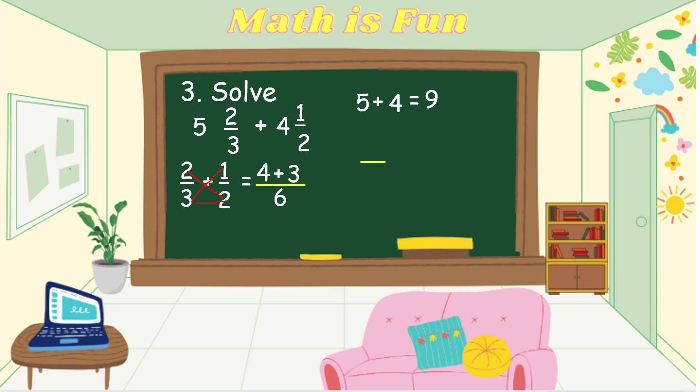We add the numerators 4 and 3: 4 plus 3 equals 7, and we keep the denominator 6. Our answer is 7 over 6. Since the numerator is larger than the denominator, this is an improper fraction.